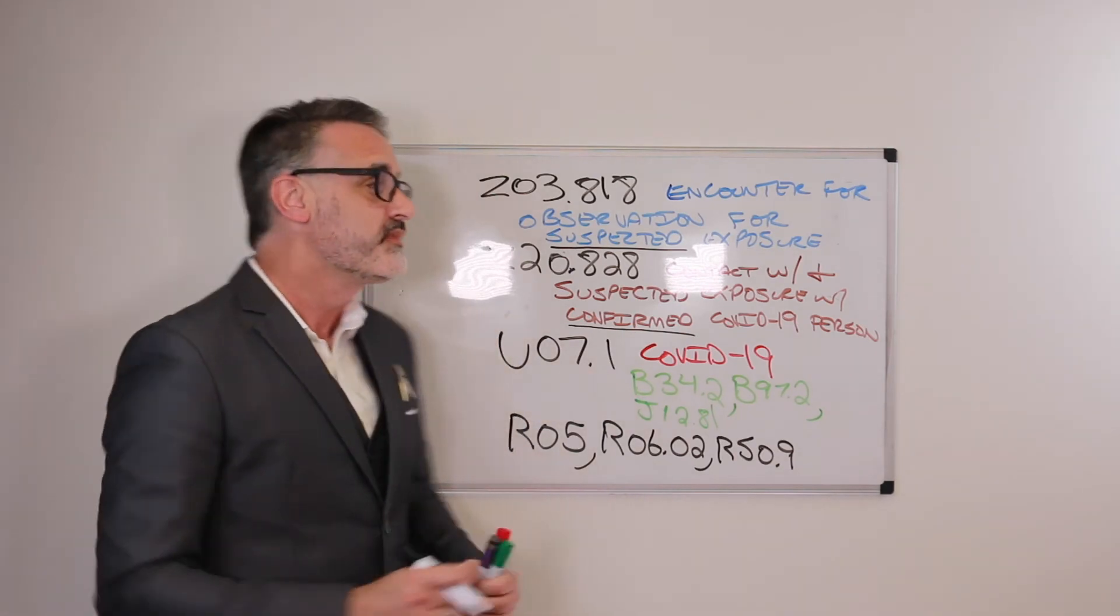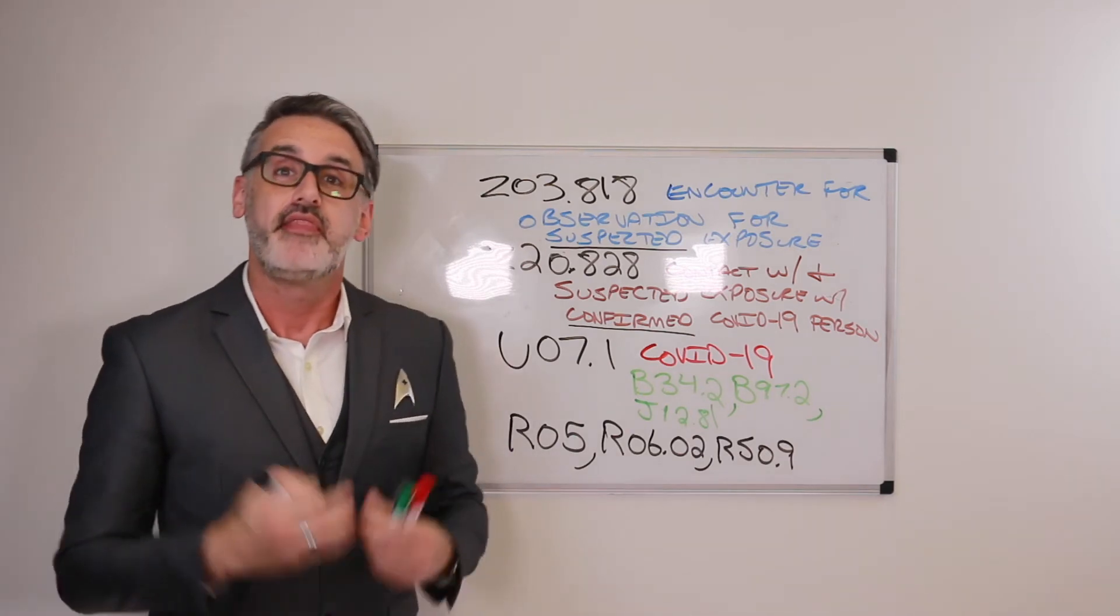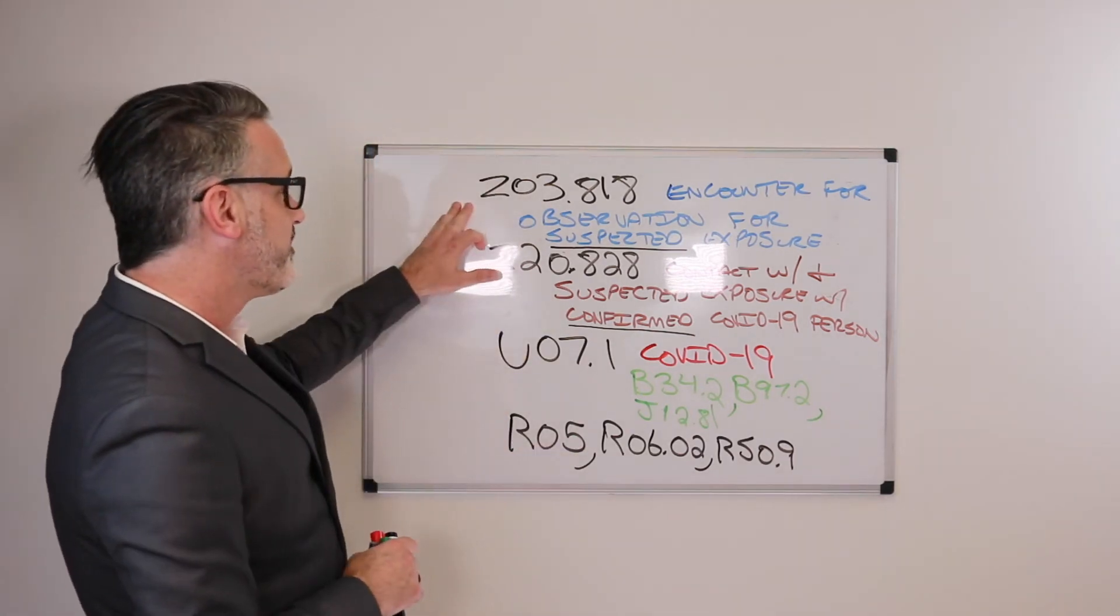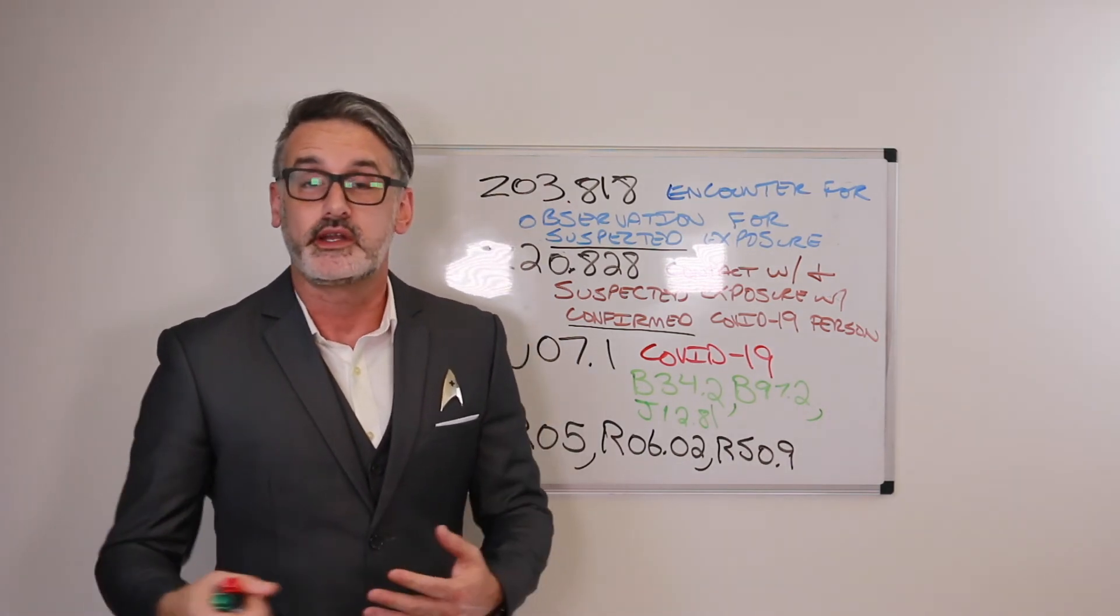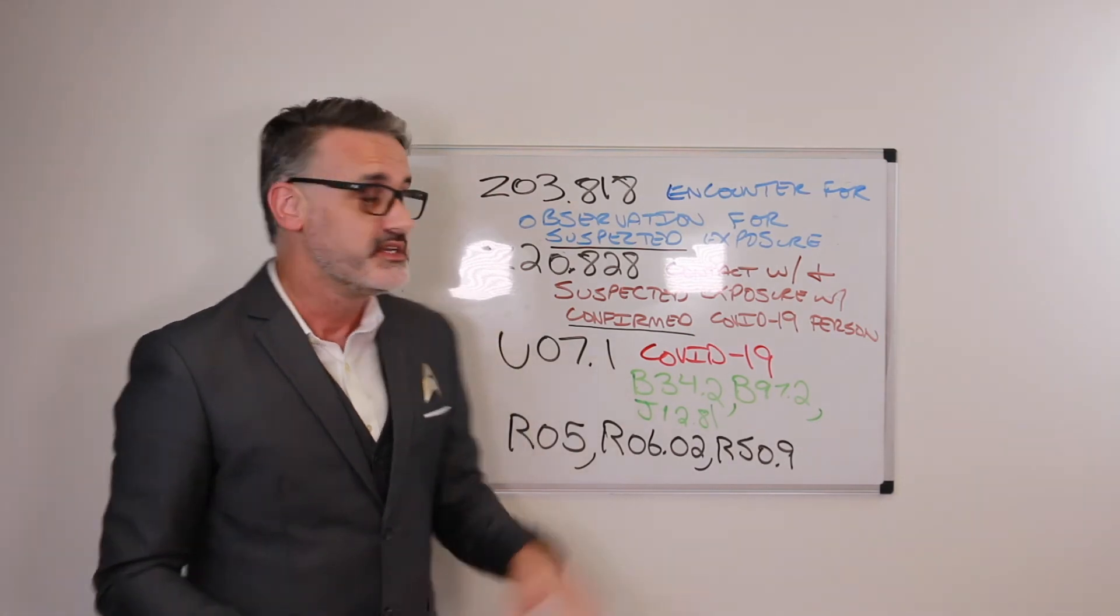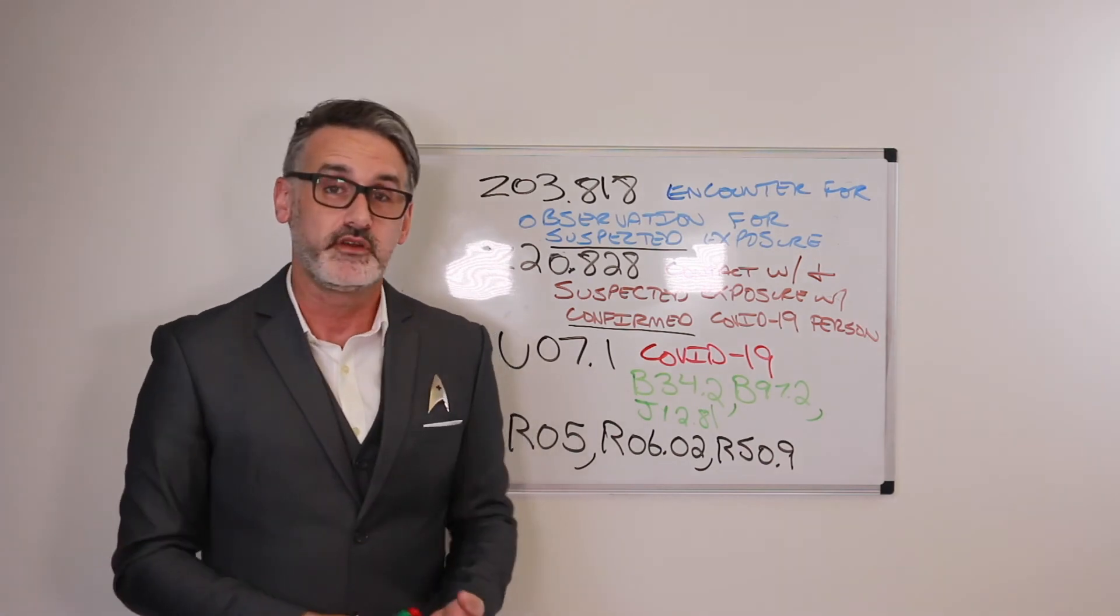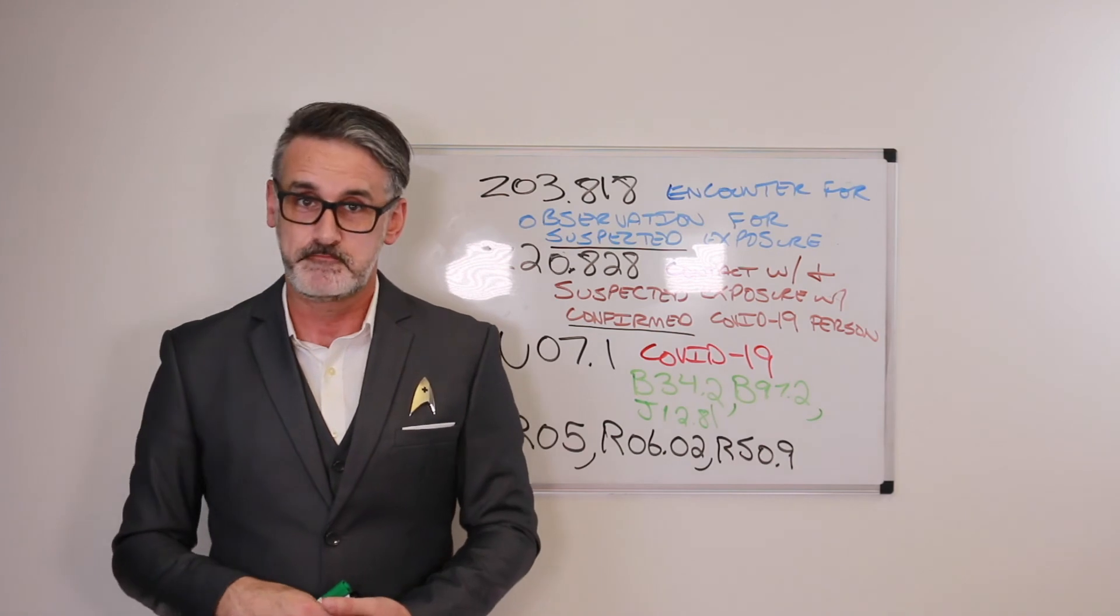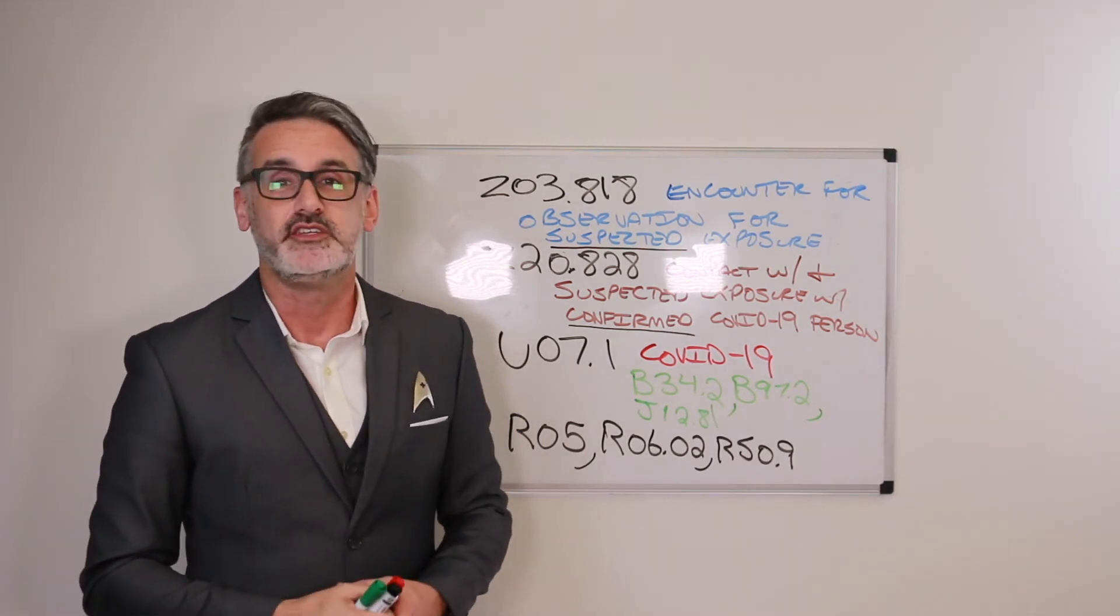So as a recap, we have a total of six different codes here that are mainly used with COVID-19 testing. Z03.818, if a patient comes in and has an interaction or encounter with a possible person or suspected person of COVID-19. Z20.828, if the patient had either confirmed or suspected to have interaction with a positive COVID-19 person.